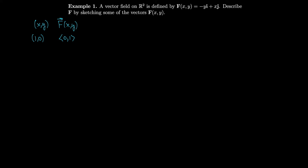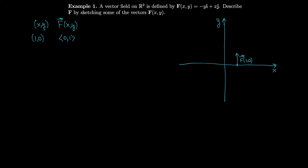Let's plot this. I'll draw some x and y axes. The point (1, 0) is right here, and the vector at that point is F(1, 0). For the point (2, 2), the vector becomes (-2, 2). I'll place the point (2, 2) and draw the corresponding vector, which is F(2, 2). So we've got two vectors in our vector field.